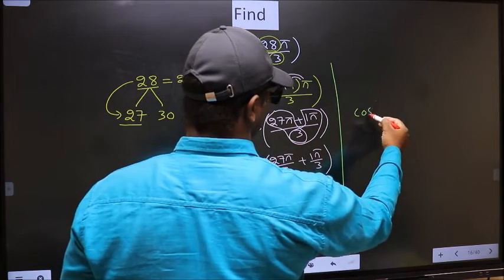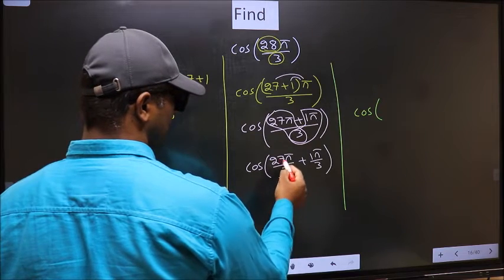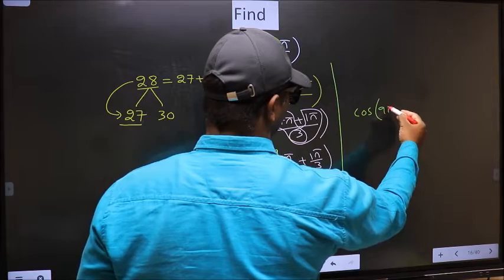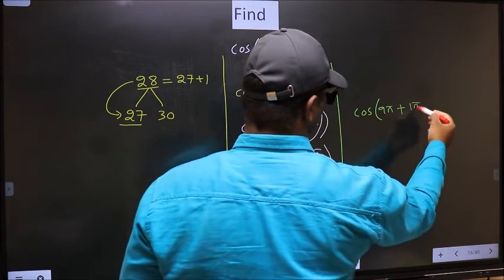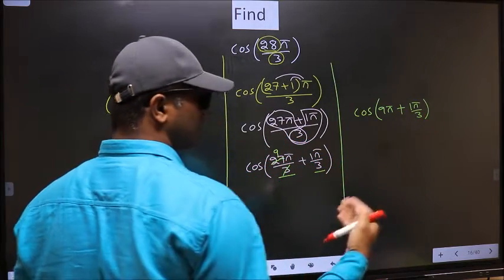Cos. Now here we should cancel. 3 into 1, 3 into 9. So we get 9π plus, this no change, π/3.